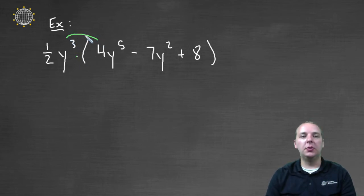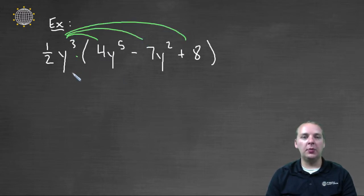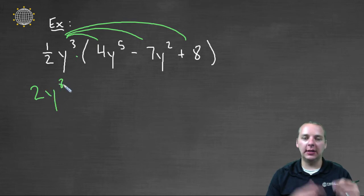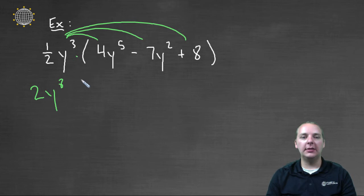So we're going to distribute one-half y³ to the first, the second, and the third term in the polynomial. So here we go, one-half y³ times 4y⁵, well one-half times 4 would give you 2. And y³ times y⁵ would give us y⁸, because again we add the exponents if we have like bases.